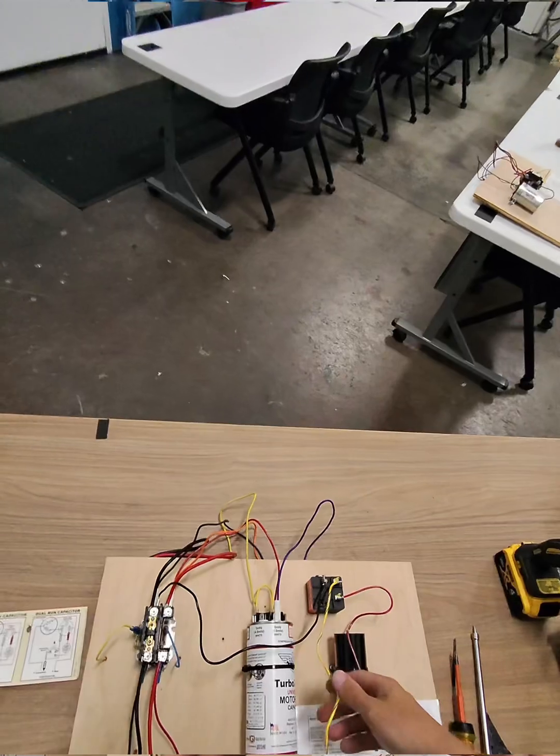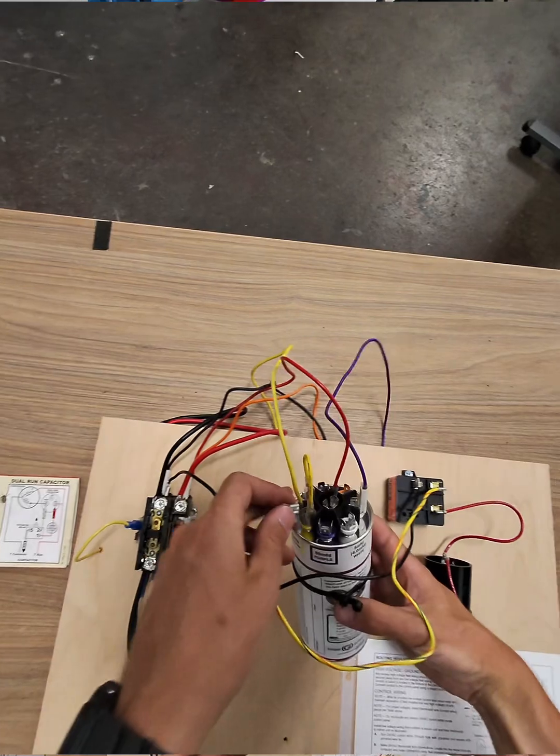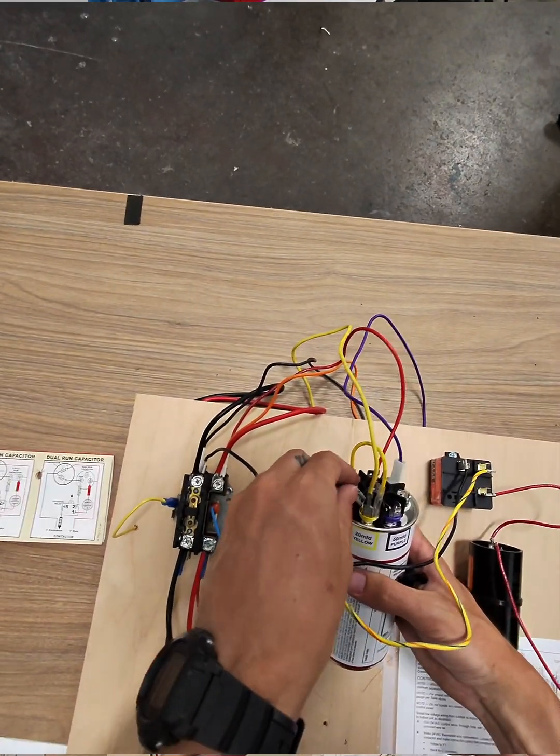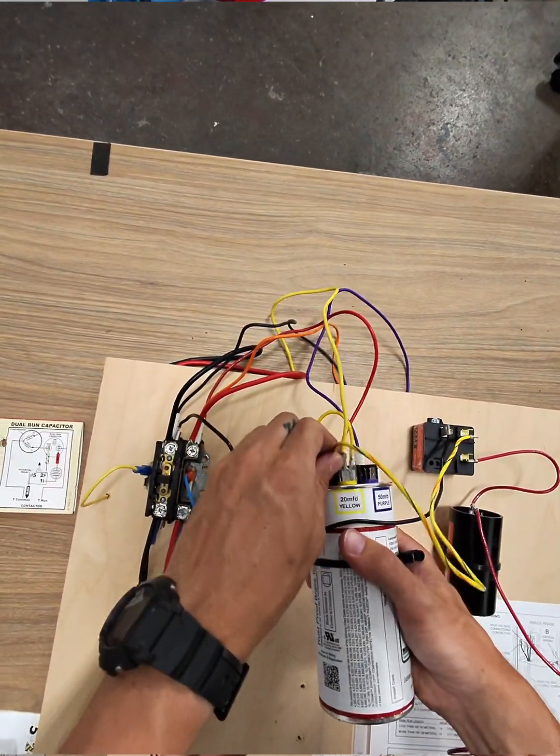So next we're going to do our striped wire, which is still going to go to the highest Herm. So these two wires are going to be the ones that mix people up.